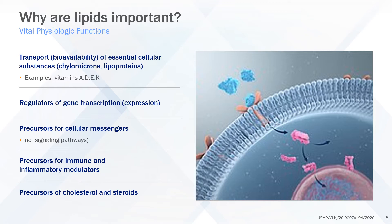Lipids directly and indirectly regulate gene transcription and are precursors for numerous cellular messengers. Lipids are precursors for immune and inflammatory modulators, which include prostaglandins, leukotrienes, and thromboxanes. Lipids are also precursors of cholesterol and steroidal compounds.